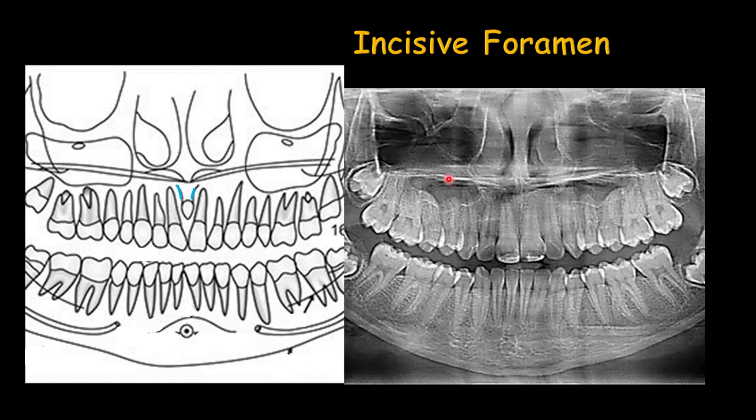The incisive foramen is beneath the anterior nasal spine, between the roots of the maxillary central incisors, and it has a round radiolucent shadow. You can see it in the panoramic radiograph — when you see a round radiolucent shape beneath the anterior nasal spine between the roots of the central incisors, you can identify it as the normal anatomical landmark called the incisive foramen.